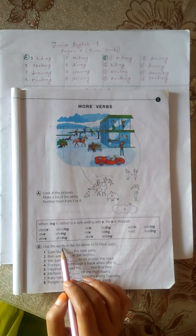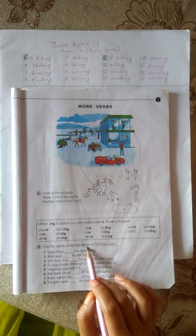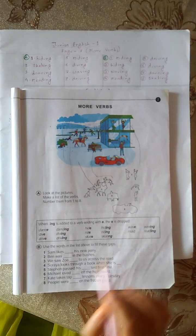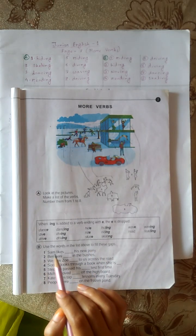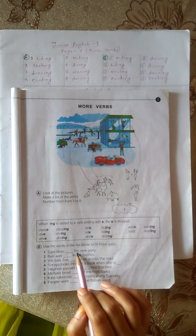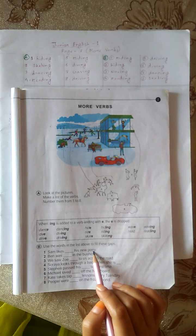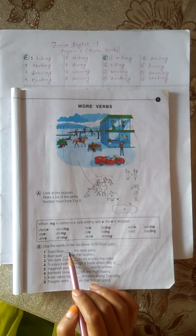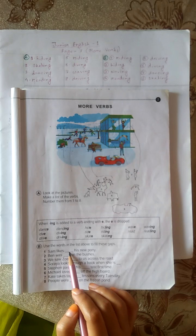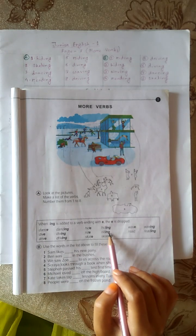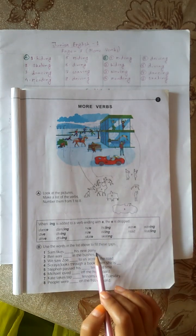Exercise B. Use the words in the list above to fill these gaps. One. Sam likes dash his new pony. Sam likes riding, R-I-D-I-N-G, his new pony.